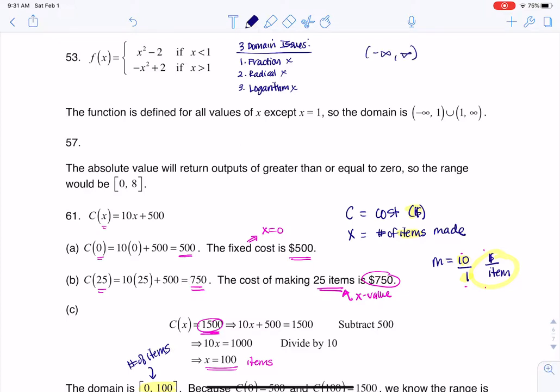But the piecewise function stuff does throw a wrench in it. We just need to look at the little domains that are listed here. If I look, it says I've got one from x being less than one, so at that point it's negative infinity to one, and then I pick right back up at one to infinity.